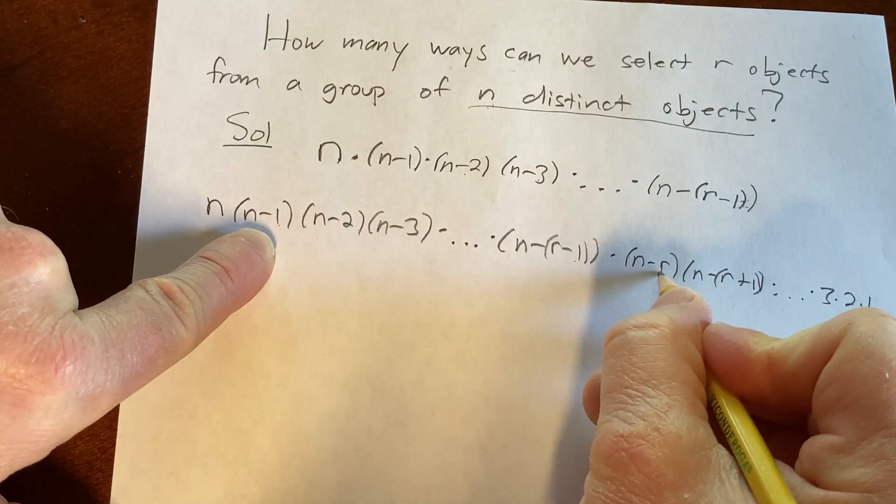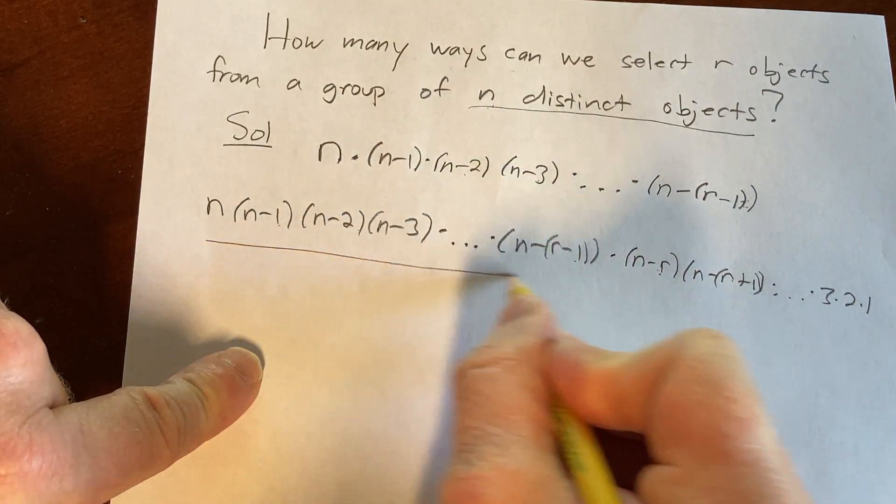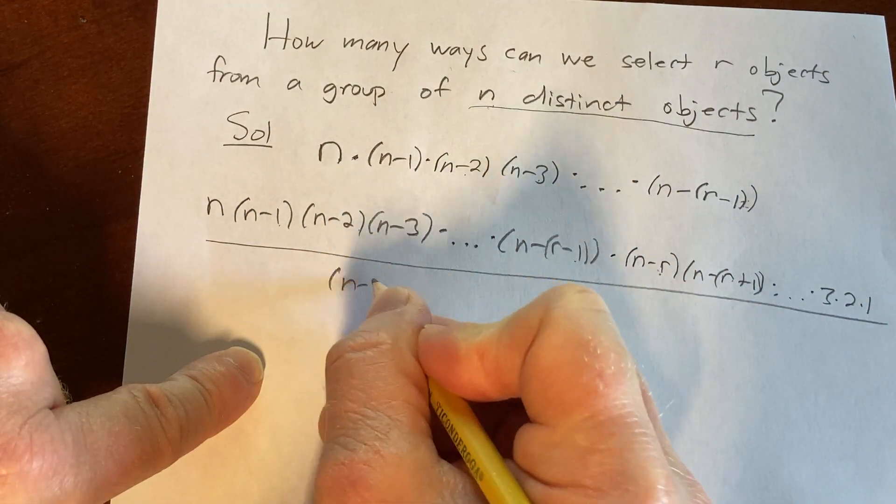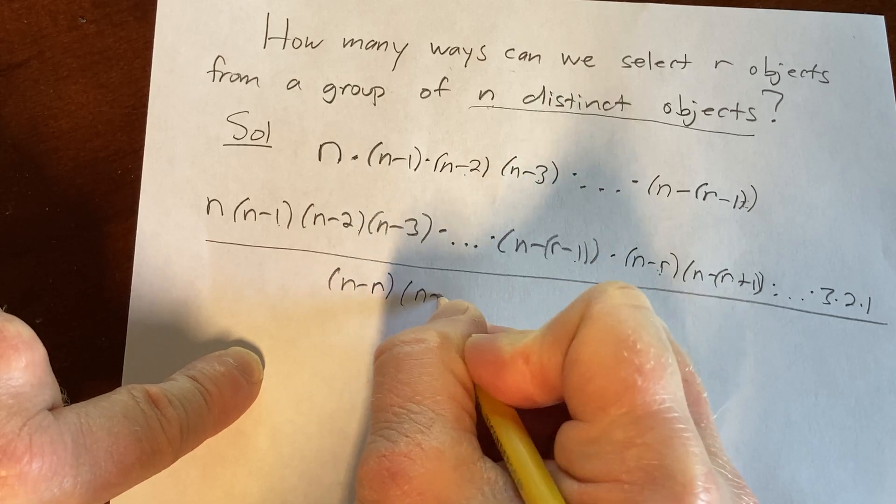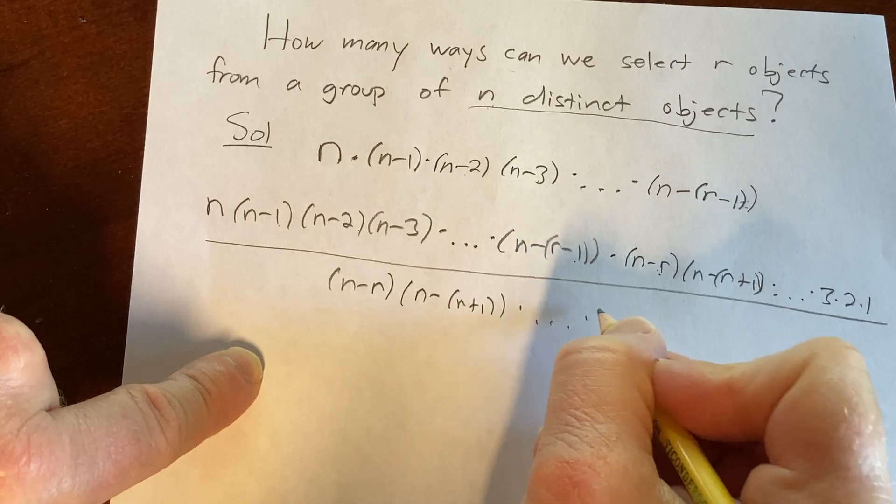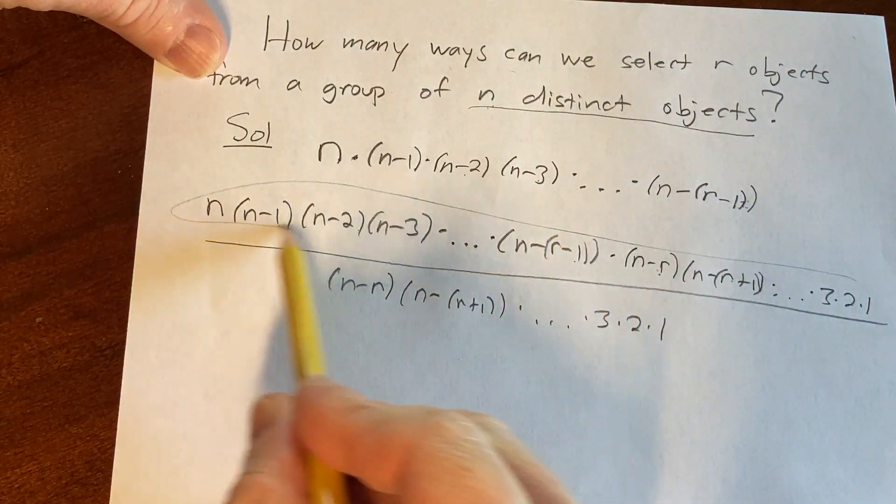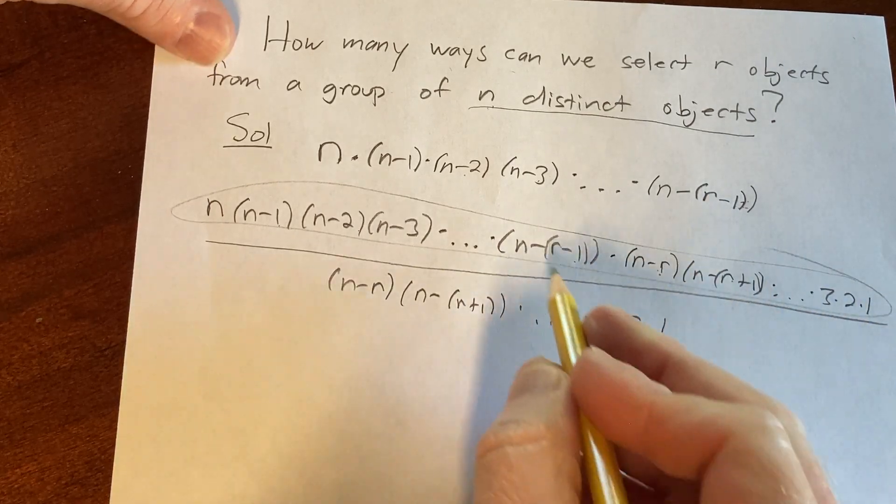Because we're adding 1, you've got to be careful. So n minus r, r plus 1, over n minus r, n minus r plus 1, times dot dot dot, 3, 2, 1. So all of this in the numerator is simply n factorial.